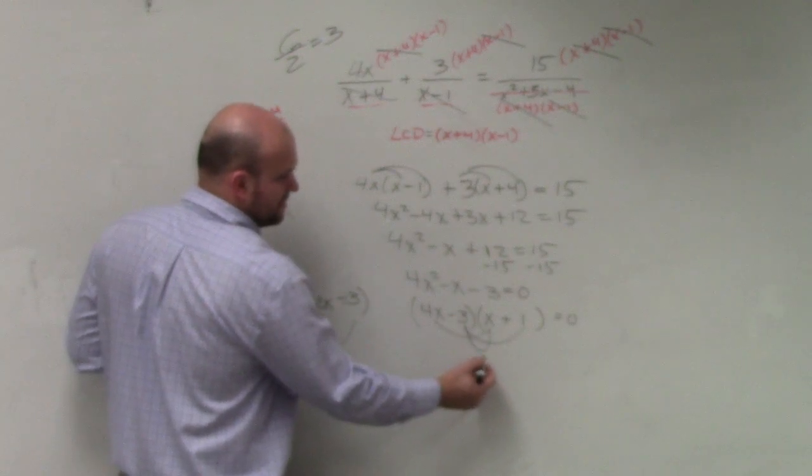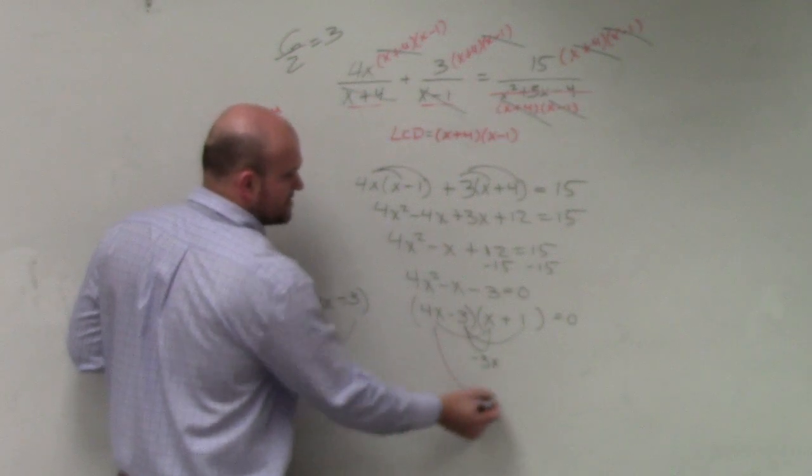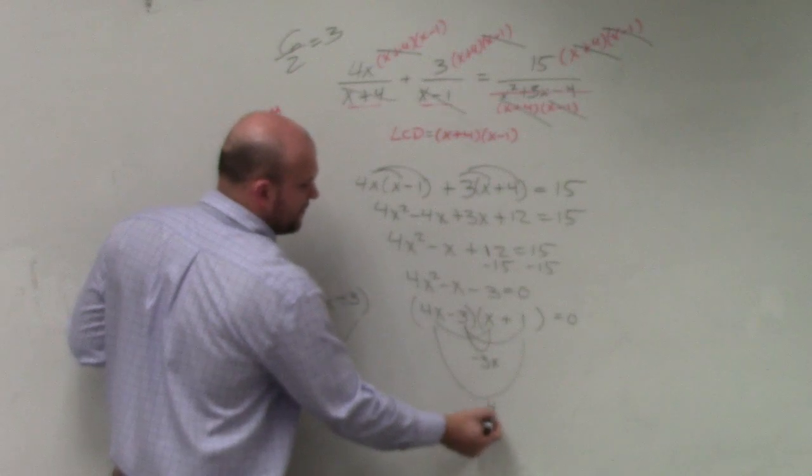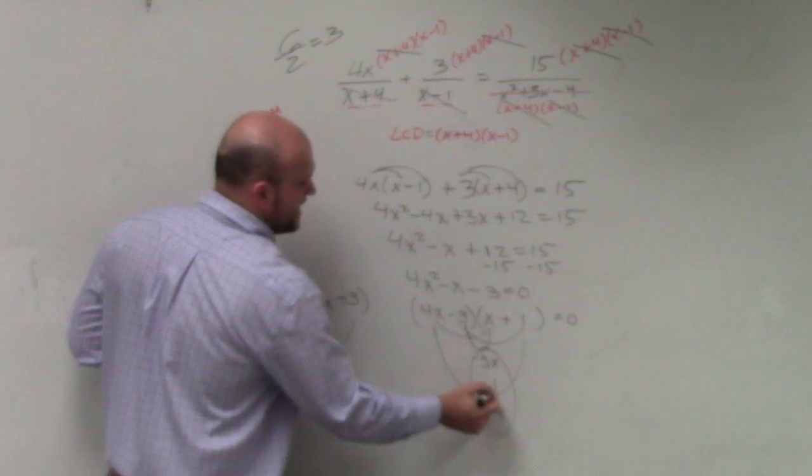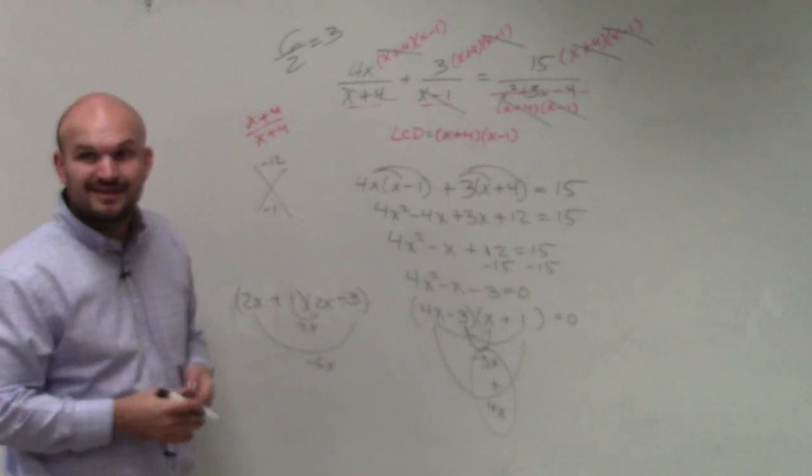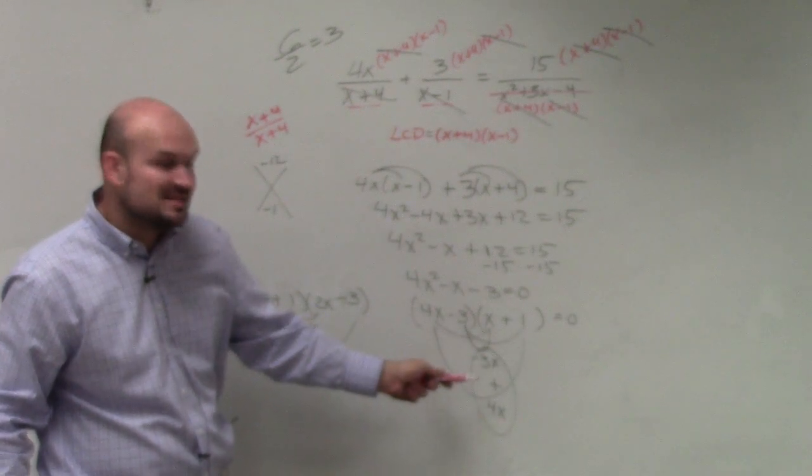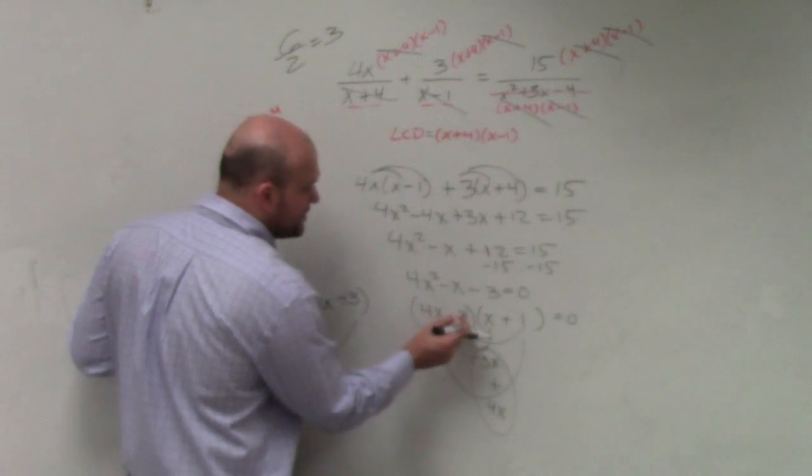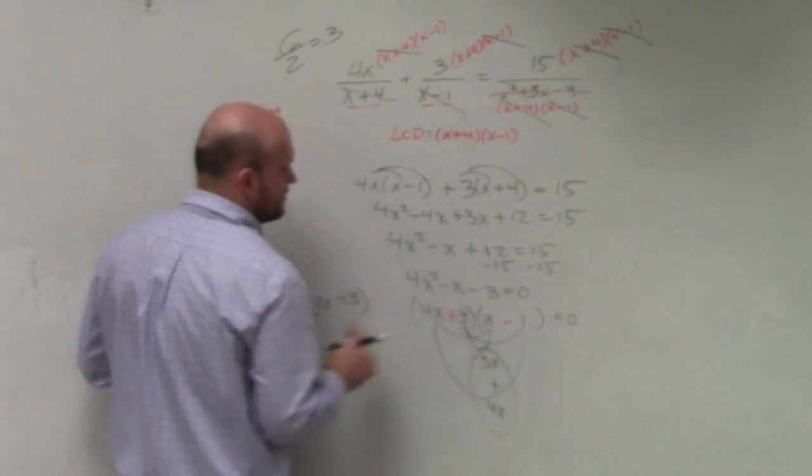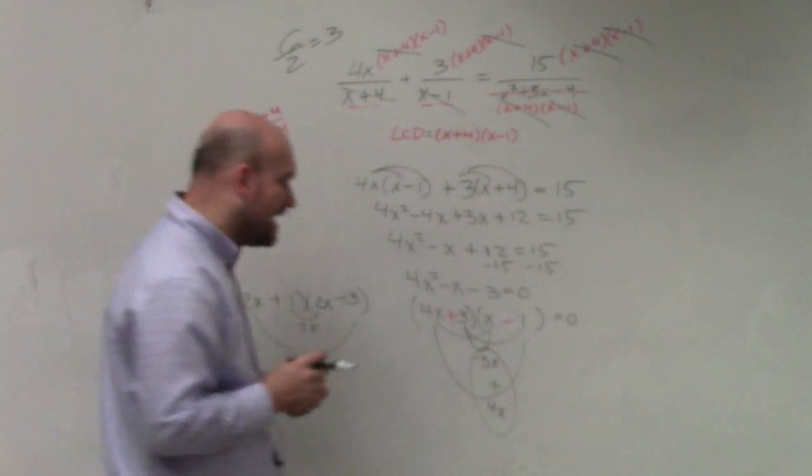Does negative 3 times x give you negative 3x and 4x times 1 gives you 4x? Do these, when you combine them, have a difference of x? Yes, but we need a difference of negative x. These have a difference of positive x. So, all I'd have to do is just change the signs. OK?